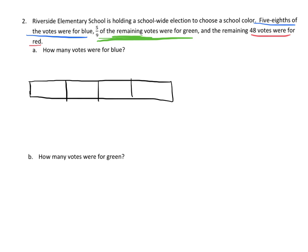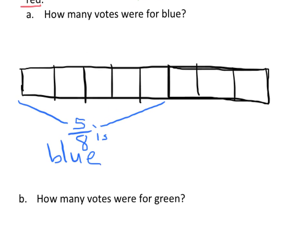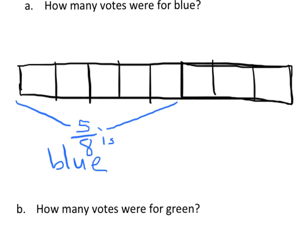We draw our tape diagram and chop it up into eighths. Five-eighths were for blue, so that's one, two, three, four, five — this five-eighths is blue. That means we have three units left over. It says five-ninths of the remaining were green, but we only have three units, and five-ninths means you're supposed to have nine units, so I'm going to zoom in.